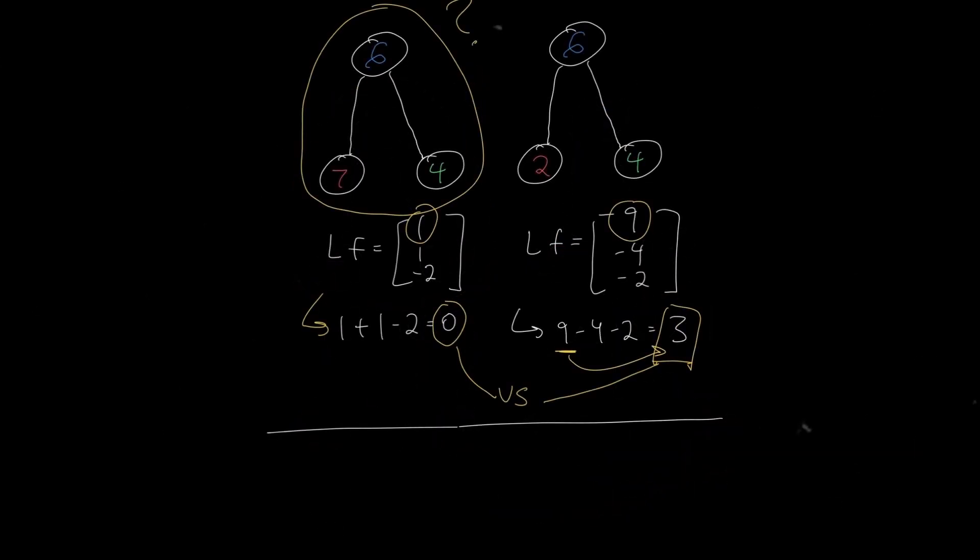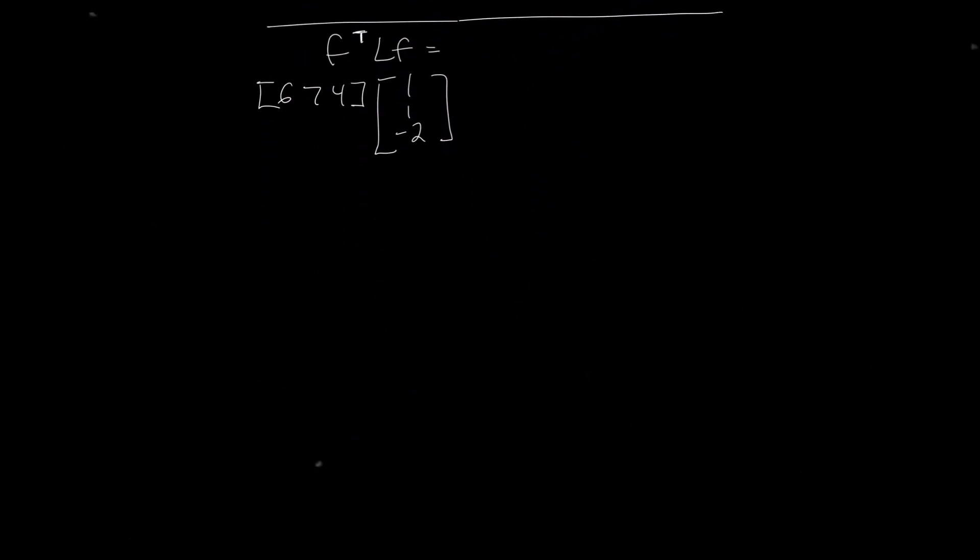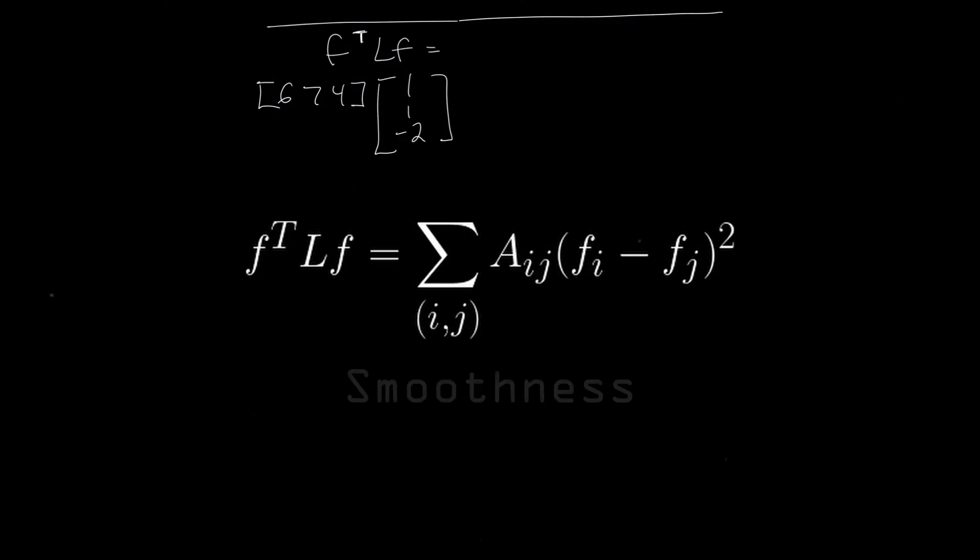This gives us a single number that captures the global similarity of a graph. Formally, we'll do this by multiplying F as a row by LF. If we rearrange F, we obtain the following equation that calculates square differences, so the sign doesn't matter.